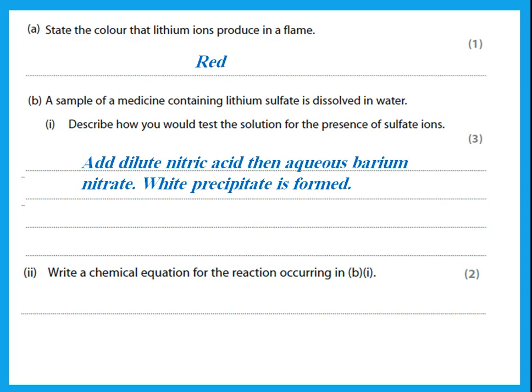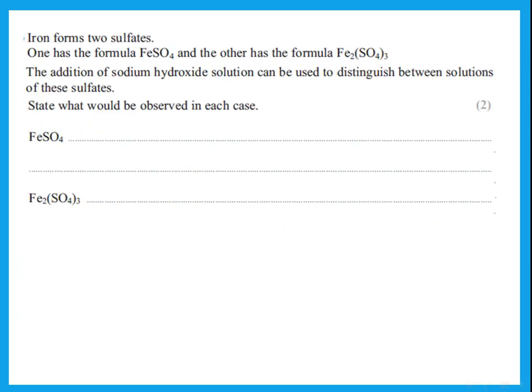Write a chemical equation for the reaction between barium nitrate and lithium sulfate. This reaction gives barium sulfate plus lithium nitrate. Remember that the white precipitate formed is barium sulfate — that is the solid. If state symbols are required, barium sulfate is the solid. Always remember to balance the equation.